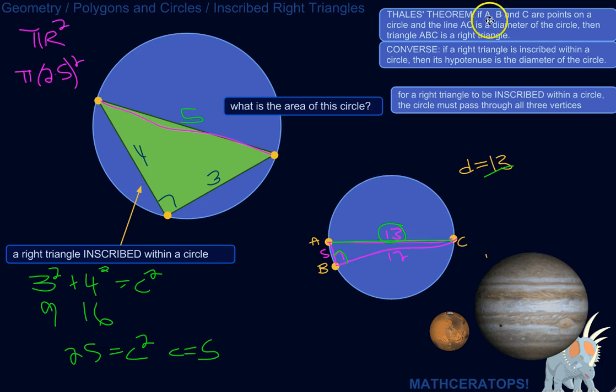So Thales' theorem: if A, B, and C are points on a circle, and the line AC has the same length as the diameter of the circle, then the triangle formed by A, B, and C is a right triangle. Conversely, if a right triangle is inscribed within a circle, then the length of its hypotenuse is the same as the length of the diameter of the circle.